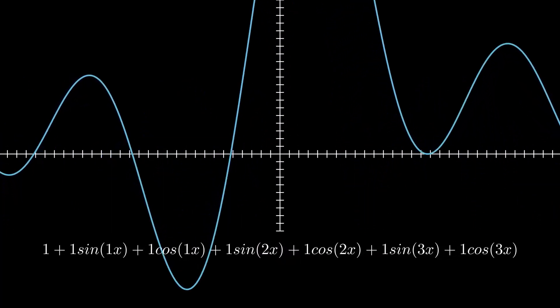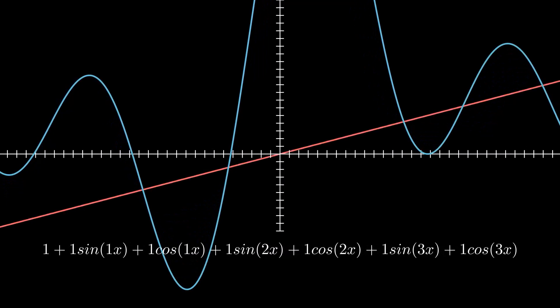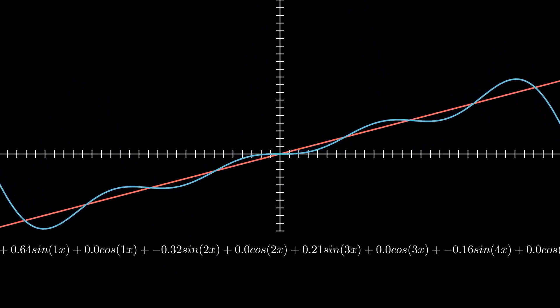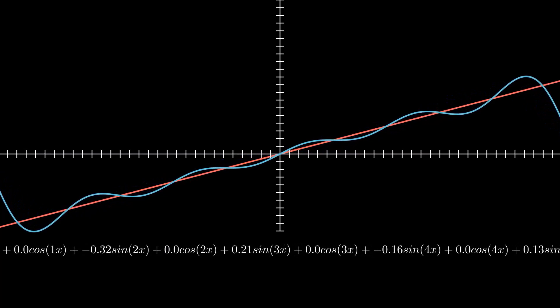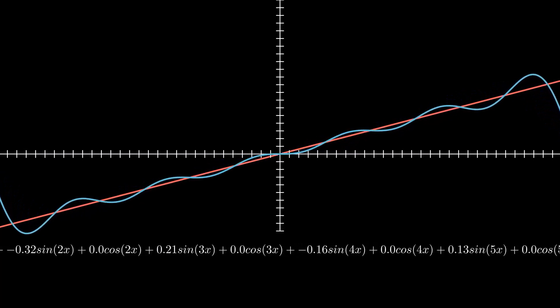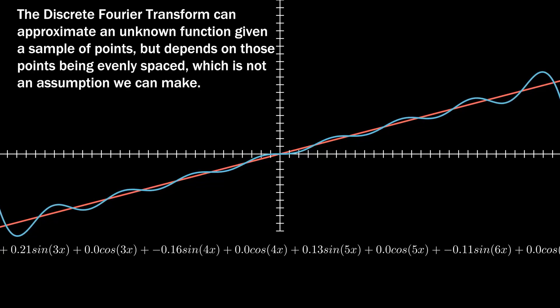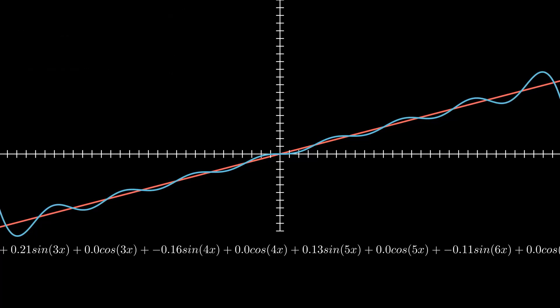By combining weighted waves of different frequencies, we can approximate a function within the range of 2 pi — one full period. Again, if we know the function, we can compute the weights, and even if we don't, we could use something called the discrete Fourier transform, which is really cool, but we're not dealing with it in this video.